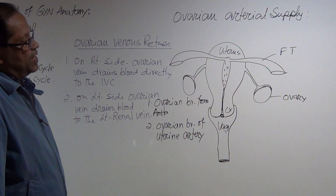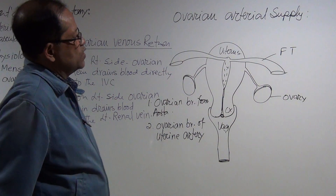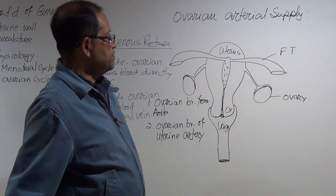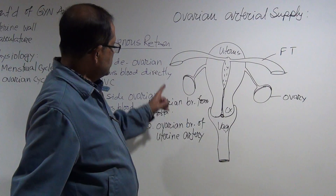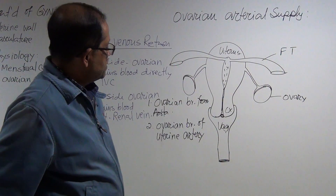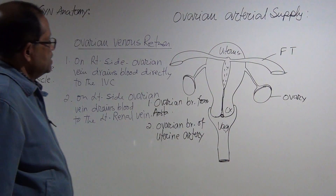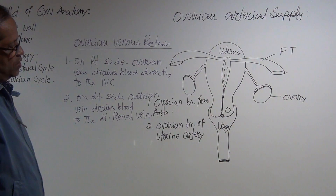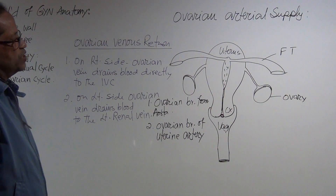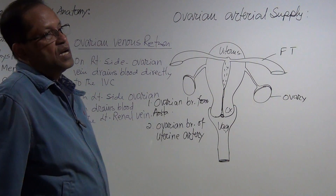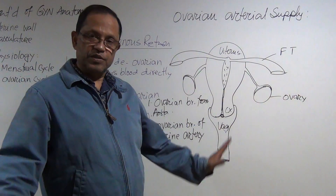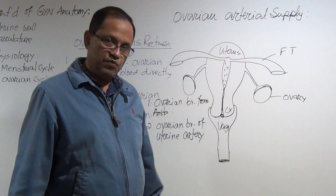On the ovary side, the left gonadal vein drains directly into the left renal vein, which then goes to the IVC. On the right side, the right gonadal or ovarian vein drains directly into the IVC.